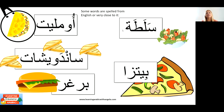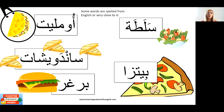Lebanese has a lot of words that either come from English or are similar to English. For example, 'salata' sounds like 'salad.' 'Omelette' — it has an Arabic name 'ajje,' but we also use the word 'omelette' because Lebanese is infused a lot with English and French. 'Pizza' is the same. 'Sandwiches' became Arabized. 'Burger' is the same.